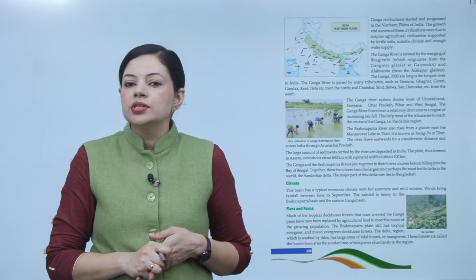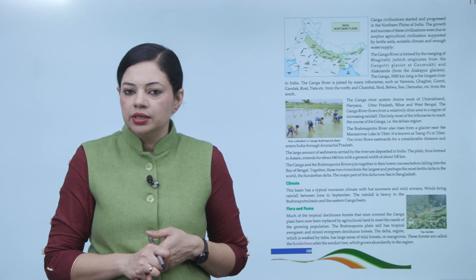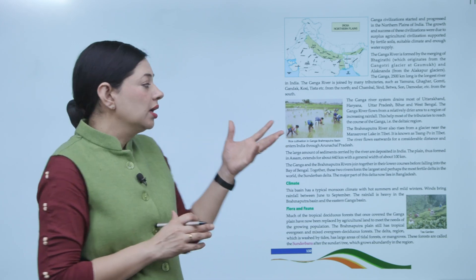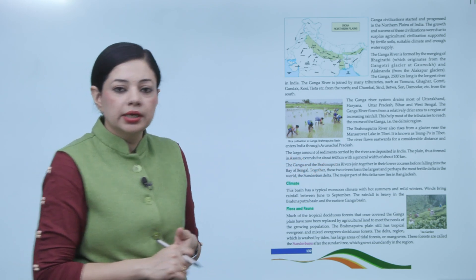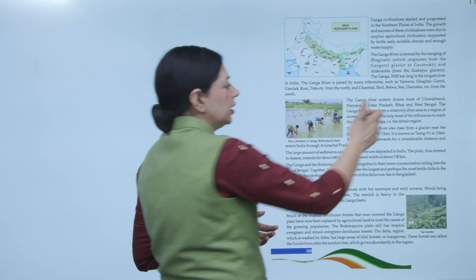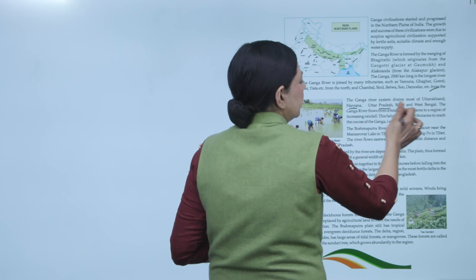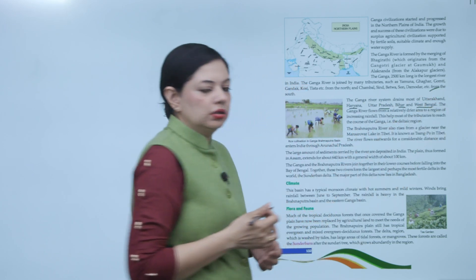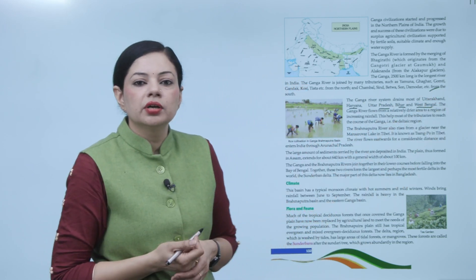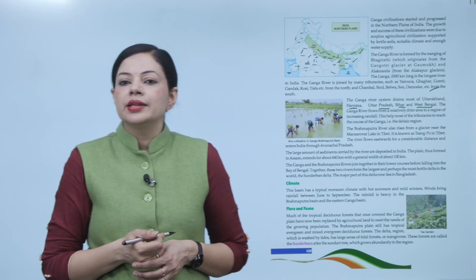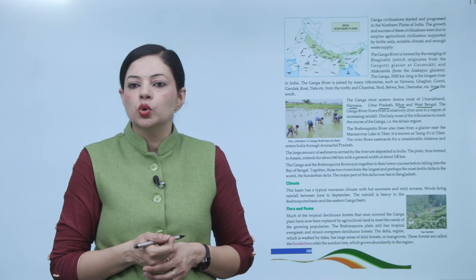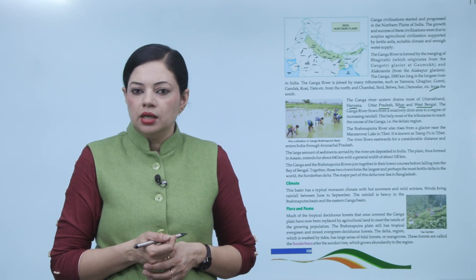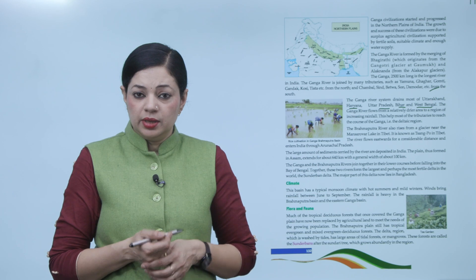The Ganga river system drains most of Uttarakhand, Haryana, Uttar Pradesh, Bihar and West Bengal. The Ganga river flows from a relatively drier area to a region of increasing rainfall, which helps most of the tributaries to reach the deltaic region.